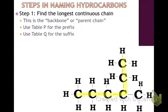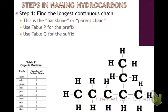So we call this the backbone, or the parent chain. Name this exactly as you would any other homologous series — the alkanes, alkenes, alkynes. You'll use Table P for the prefix and Table Q for the suffix. Table P is here, and we knew that we had six carbons in a chain. So we'll find six in Table P, and that has the prefix "hex".